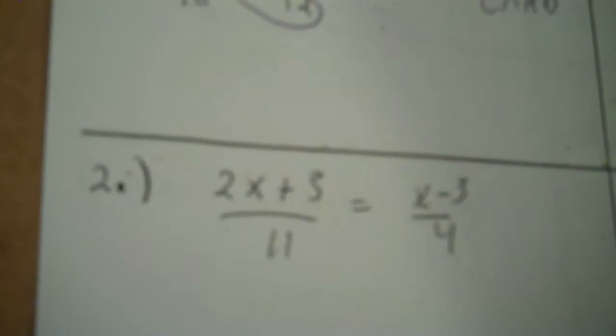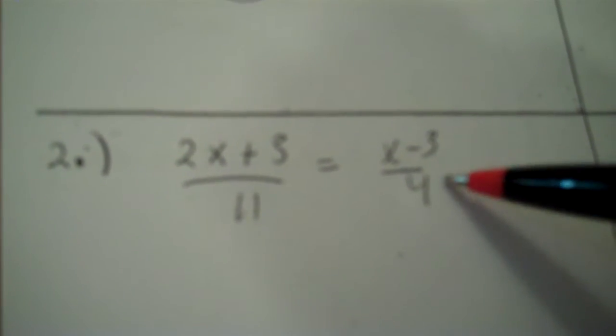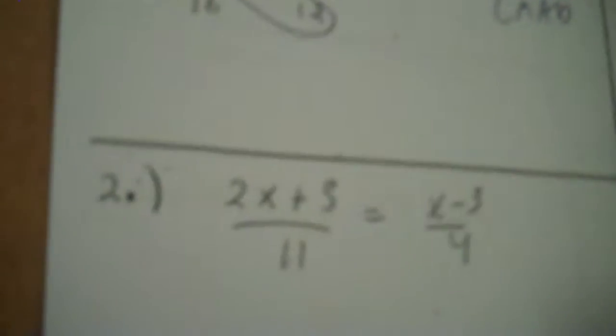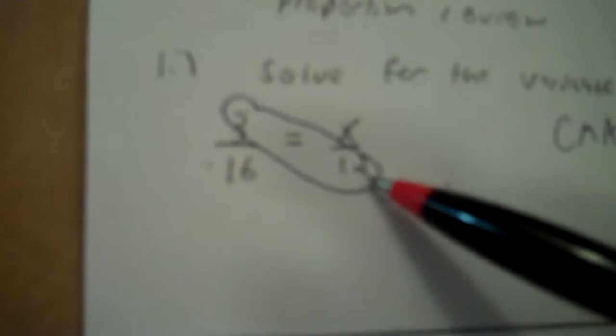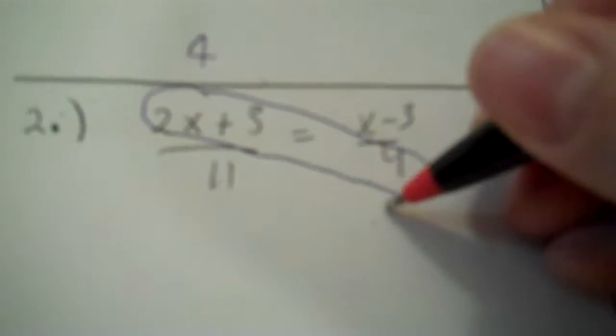Okay, this is a complex ratio. 2x plus 3 over 11 equals x minus 3 over 4. Now, you can just tell by looking at that, you're not going to be able to cross multiply and divide. You can only do that if you have x and then three other values, and the other three values you know in the proportion.